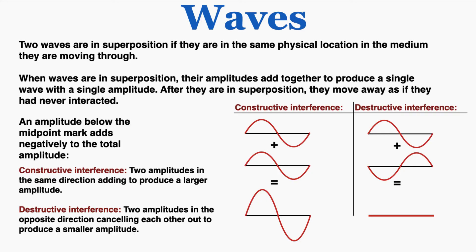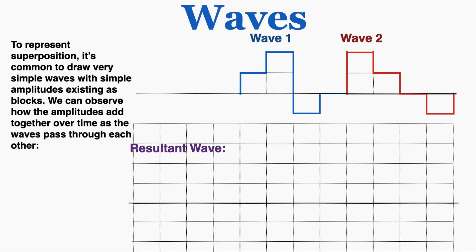To represent superposition, it's common to draw very simple waves with simple amplitudes existing as blocks. We can observe how the amplitudes add together over time as the waves pass through each other. I have blue wave 1 and red wave 2, and I'm going to have wave 2 pass through wave 1, drawing the total overall wave produced by the interaction in purple. To figure out what that wave looks like, I always add the amplitudes together, and any negative amplitude below the axis takes away from any positive amplitude.